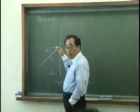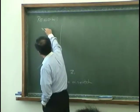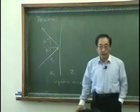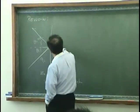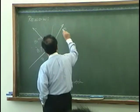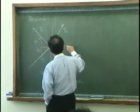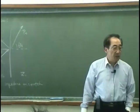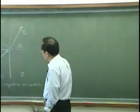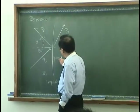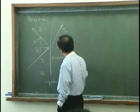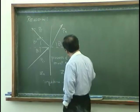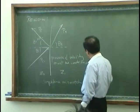Then due to this impedance mismatch, this incident wave will be reflected, and we found that the reflected angle is the same as the incident angle. There will also be some wave that is transmitted, with transmitted angle theta_t.